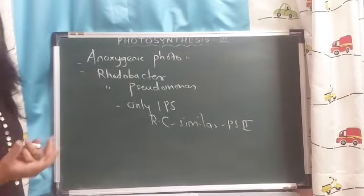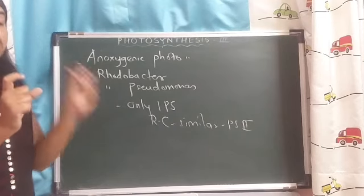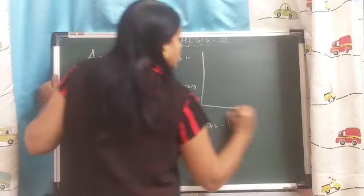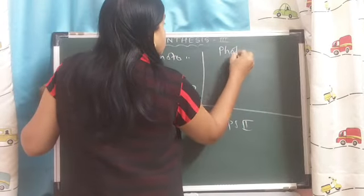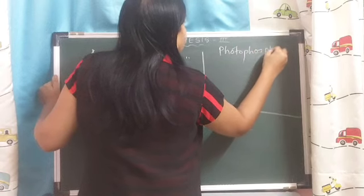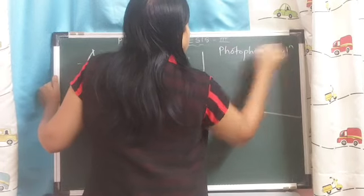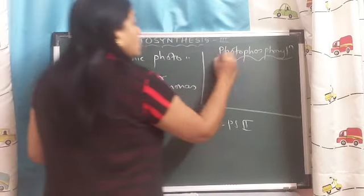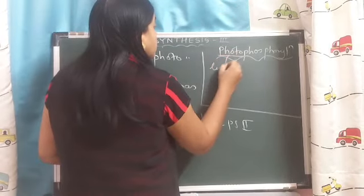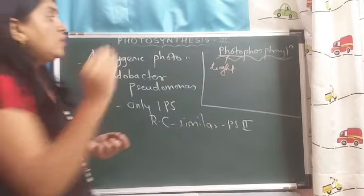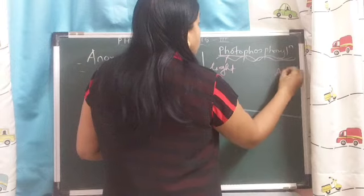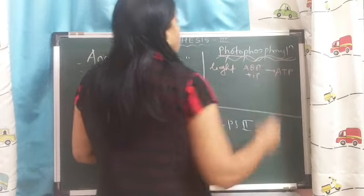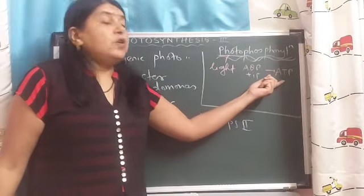Now we will discuss what is the meaning of the word photophosphorylation. Photo means light. Phosphorylation means formation of ATP from ADP and inorganic phosphate. So inorganic phosphate and ADP will form ATP — that is phosphorylation.